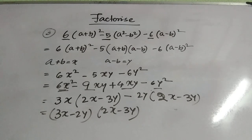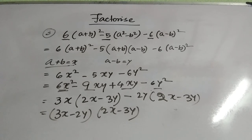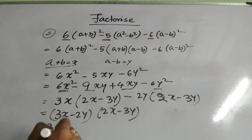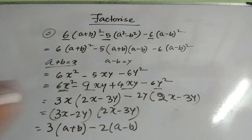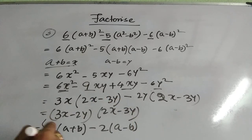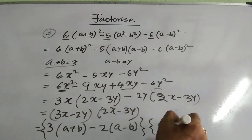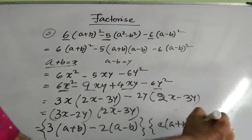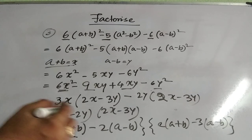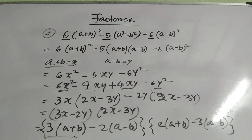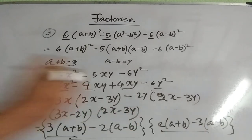Back-substituting x = a + b and y = a - b, the first factor is 3(a + b) - 2(a - b) and the second factor is 2(a + b) - 3(a - b). You can further simplify these to obtain explicit expressions in a and b.